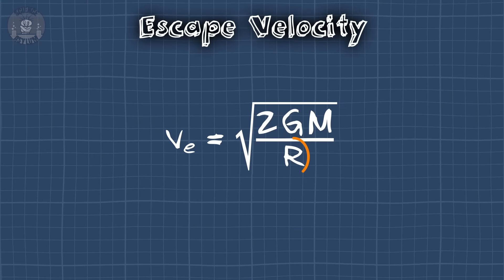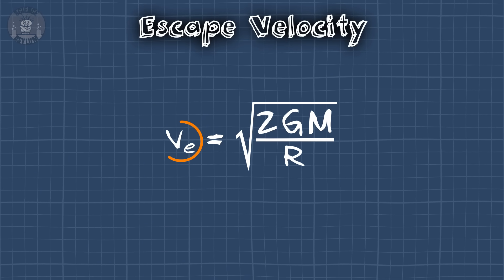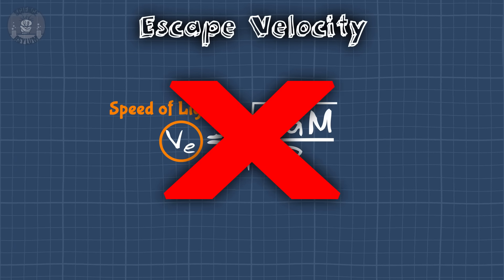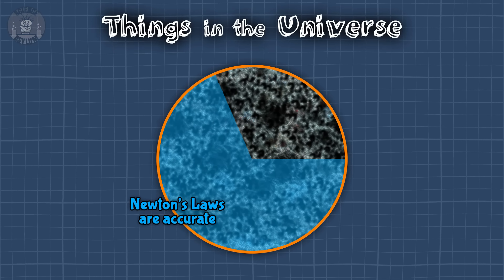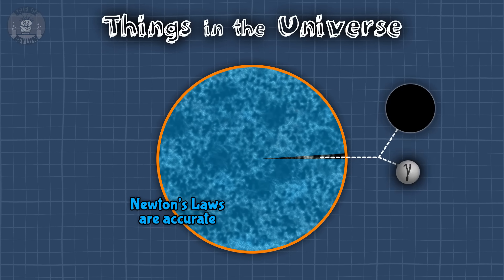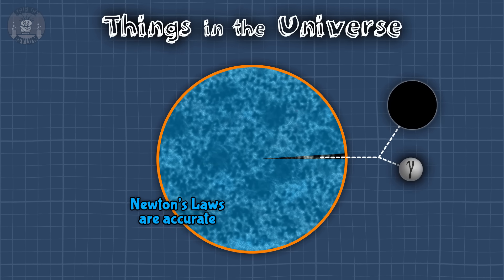It seems pretty natural to take a concept like this to the extreme. There should be some choice of R such that the resulting speed is the speed of light. Except this would be wrong. It's wrong because we wouldn't be considering relativity.